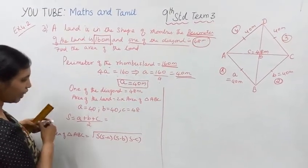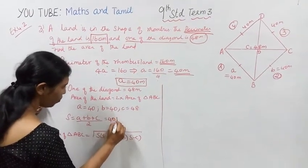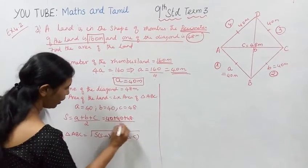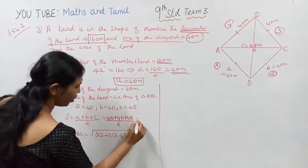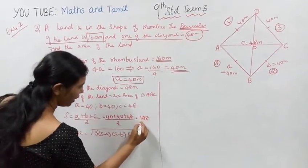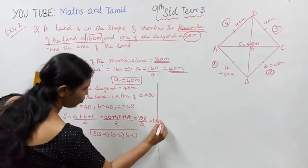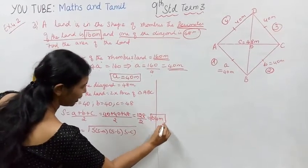s equals 40 plus 40 plus 48 divided by 2. 40 plus 40 is 80, 80 plus 48 is 128 divided by 2, that equals 64.